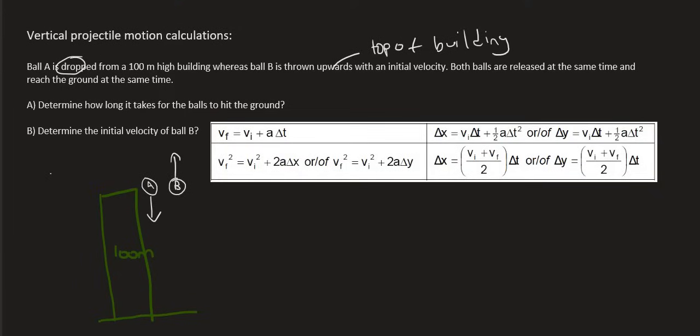We do know they have told us that A and B are going to hit the ground at the same time. So I'm just going to use ball A because I know a lot about ball A. First of all, I know what its initial velocity is.